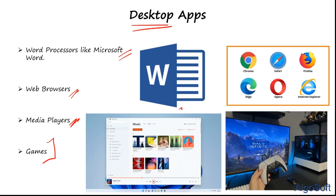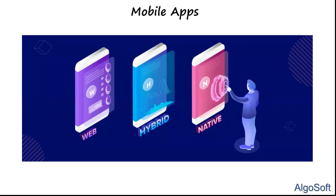Desktop apps have been made responsive as the number of mobile users has been increasing more than desktop users. To cater to the larger audience, the industry is moving first toward mobile apps, then desktop apps. Mobile apps are of three types: web, hybrid, and native — very important to understand.